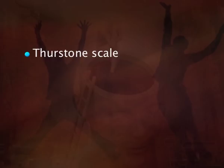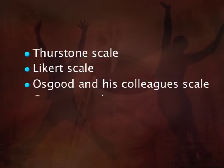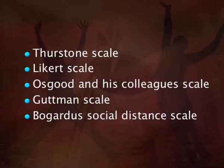Now let us see what are the various techniques or scales that have been developed to measure attitudes. The most important scales are unique contributions of eminent personalities in social psychology. The first is the Thurston scale, the second is the Likert scale, the third is Osgood and his colleagues' scale, the fourth is the Guttman scale, and the fifth is the Bogardus social distance scale. We will discuss these topics one by one.